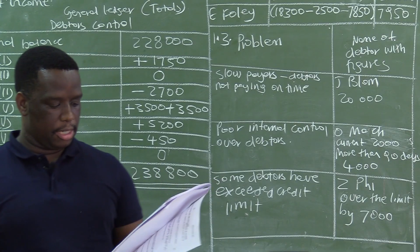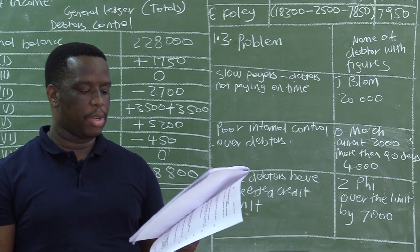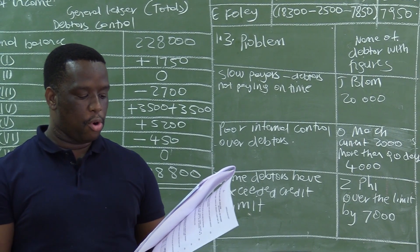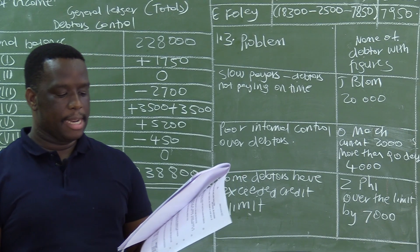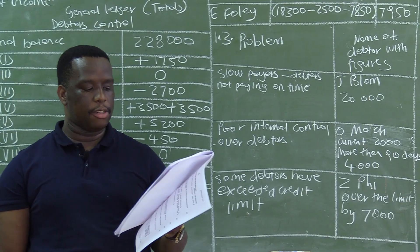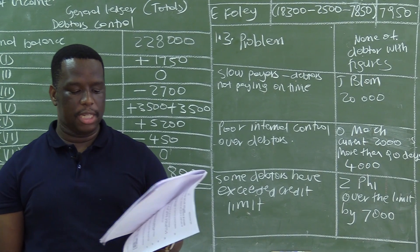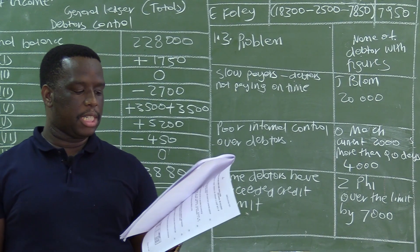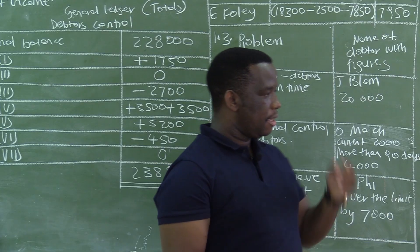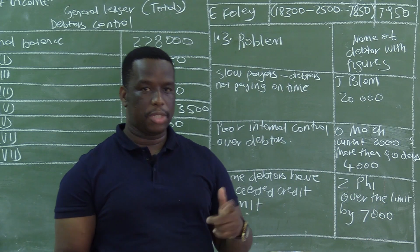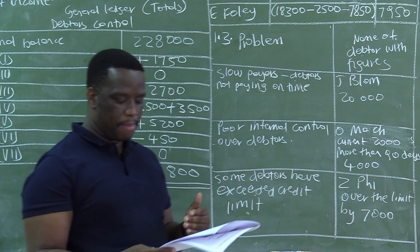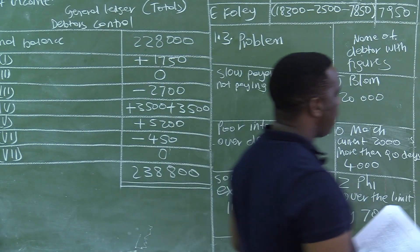Susan is a member of the sales staff, but is also responsible for collecting cash from customers who choose to pay in this way, receiving goods returned by customers, and issuing credit notes. The internal auditor is not happy with Susan's job description as he feels it has the potential for fraud, which could lead to loss of cash and trading stock.